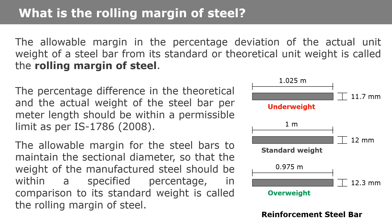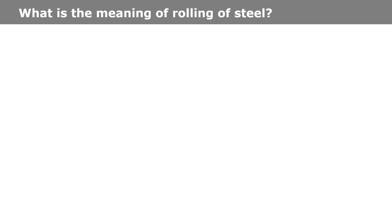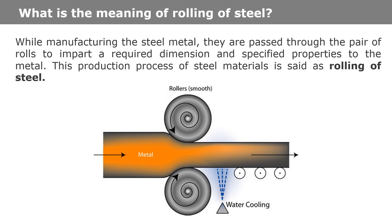What is the meaning of rolling of steel? While manufacturing the steel, the metal is passed through a pair of rolls to impart a required dimension and a specified property to the metal. This production process of steel material is called rolling of steel.